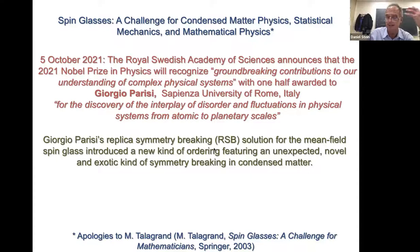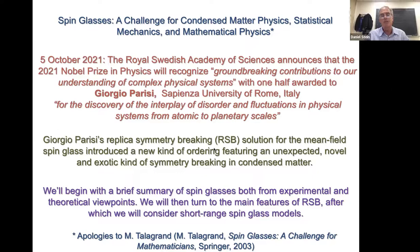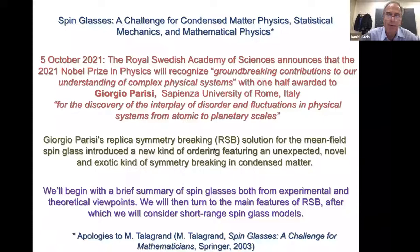What I will do is begin with a brief summary of spin glasses, both from the experimental and theoretical viewpoints. Then I will turn to the main features of Parisi's solution, known as replica symmetry breaking or RSB. And then, hopefully with enough time, I will tell you about what we now understand about the still unsolved problem of short-range spin glasses.